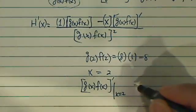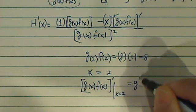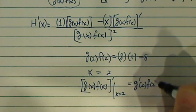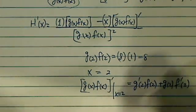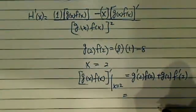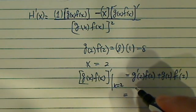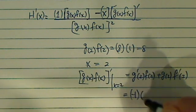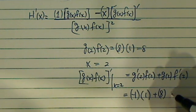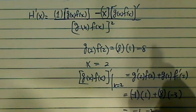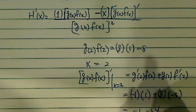Now earlier we said this equals g'(2)f(2) plus g(2)f'(2). Now using our table earlier we made, g'(2) is -1, f(2) is 1, plus g(2), which is 8, and f'(2), I have a -3 here, so I have -1, -24, which is equal to -25.